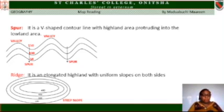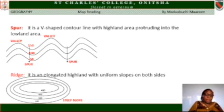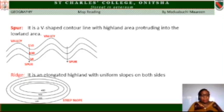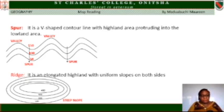A ridge is an elongated highland with land sloping down on both sides. From the diagram, you can see that the contour lines are elongated. Sometimes it can be a gentle ridge, but the one shown on the map is a steeper ridge.